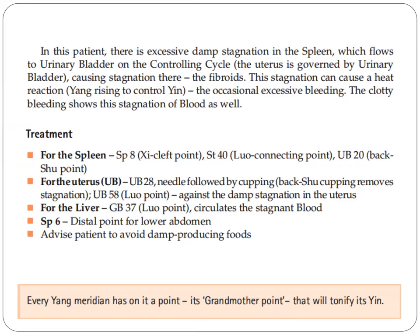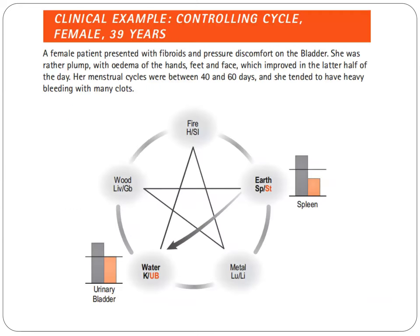For the liver, we use GB-37, the luo point, which circulates the stomach blood. Spleen-6, the distal point for the lower abdomen. Advise patient to avoid damp-producing food. Every yang meridian has its grandmother point that will tonify its yin. For the clinical example of the controlling cycle, we have a female patient, 39 years old, who presented with fibroids and pressure discomfort on the bladder. She was rather plump with edema of the hands, feet, and face, which improved in the latter half of the day. Her menstrual cycles were between 40 and 60 days, and she tended to have heavy bleeding with many clots. In the illustration, the earth/spleen shows elevated yin.